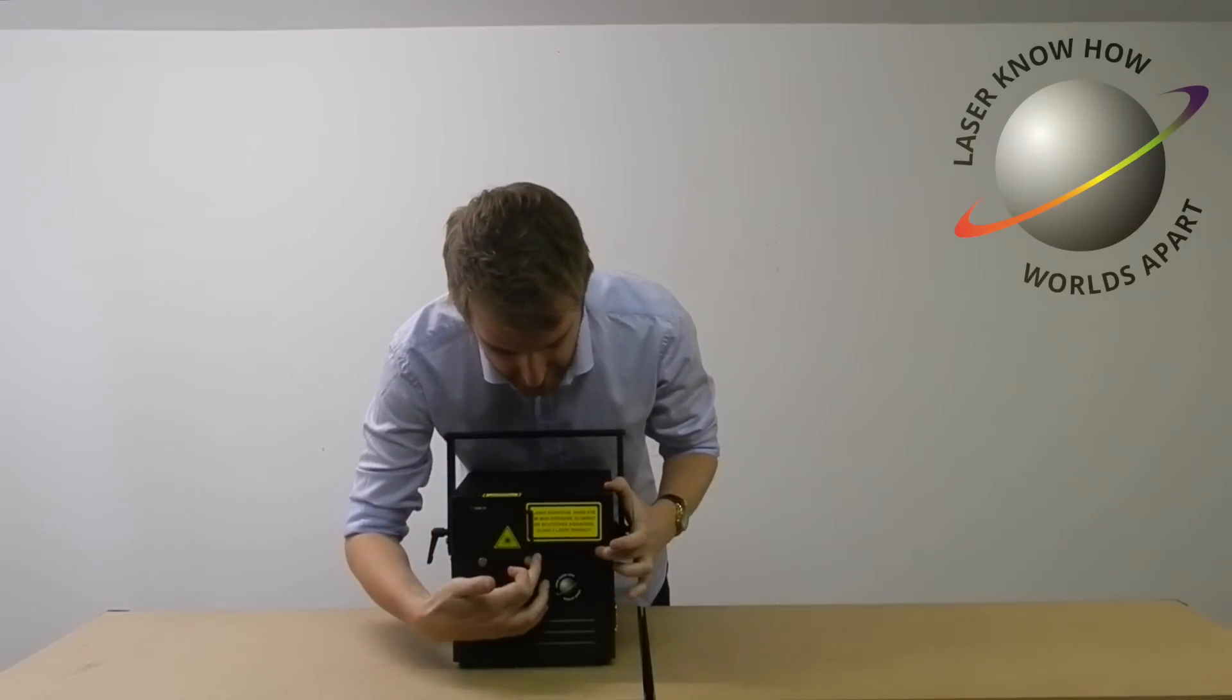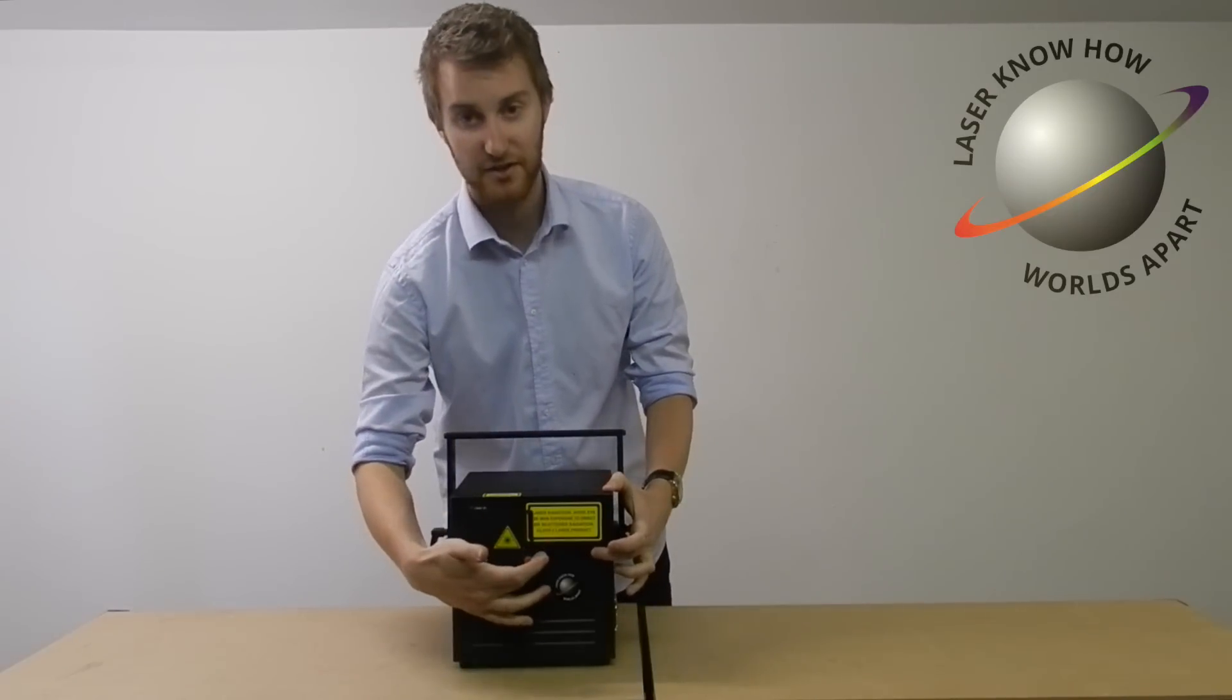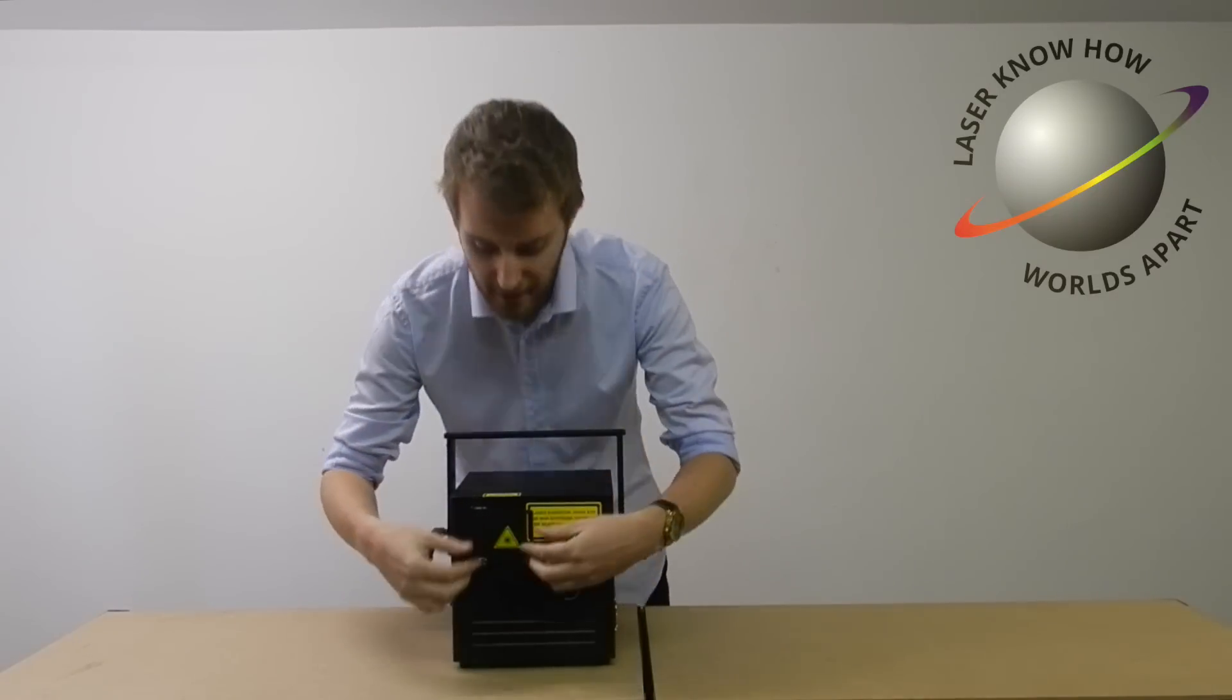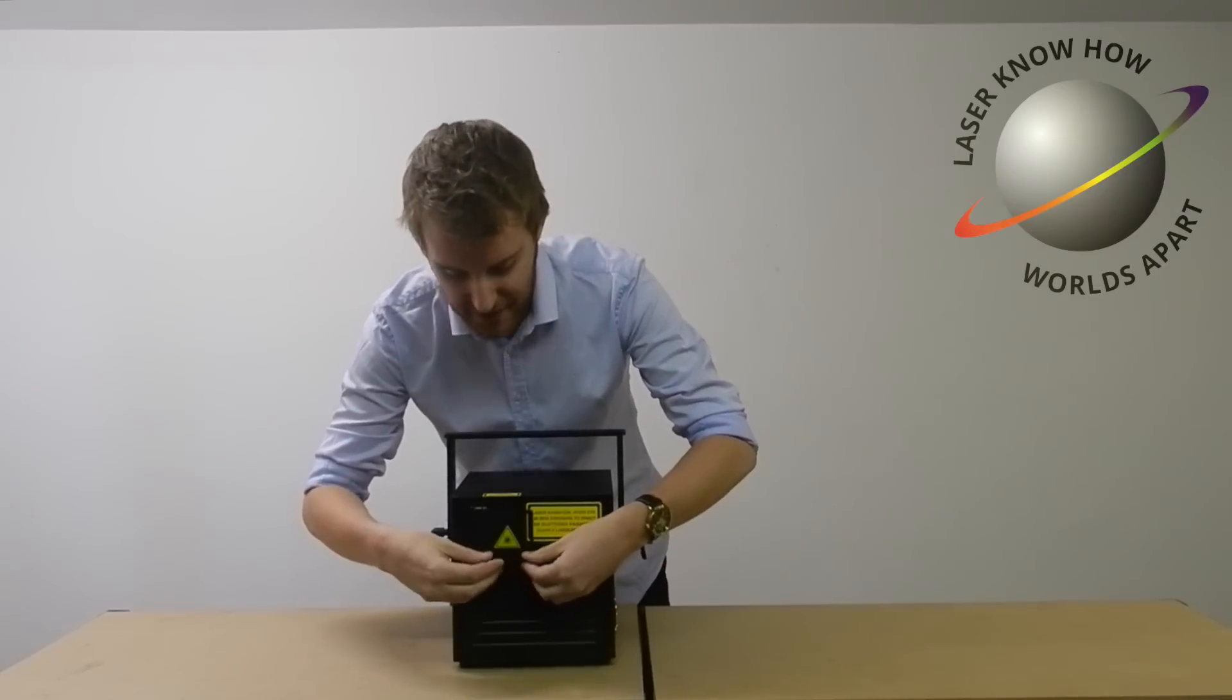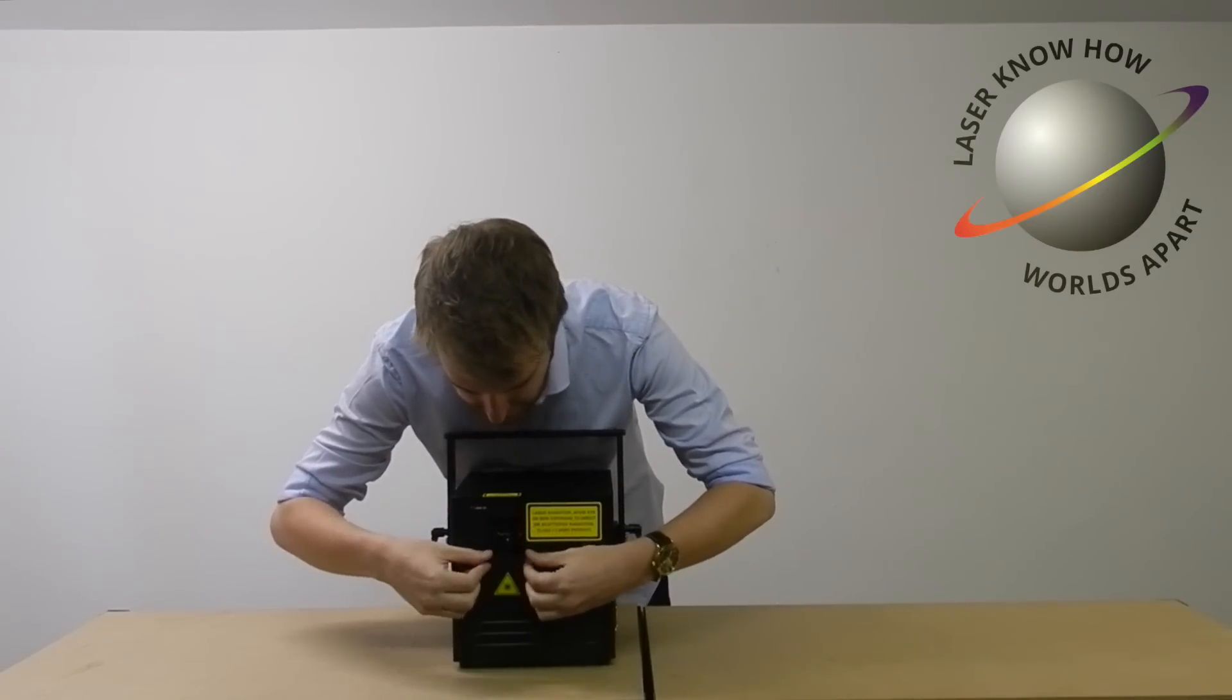Behind this panel here, you've got all your alignment controls. That's just done with an allen key, so that panel just unscrews and you can align your laser. We've also got the laser aperture protector down here, so if we slide that down, inside here we've got the scanning mirrors.